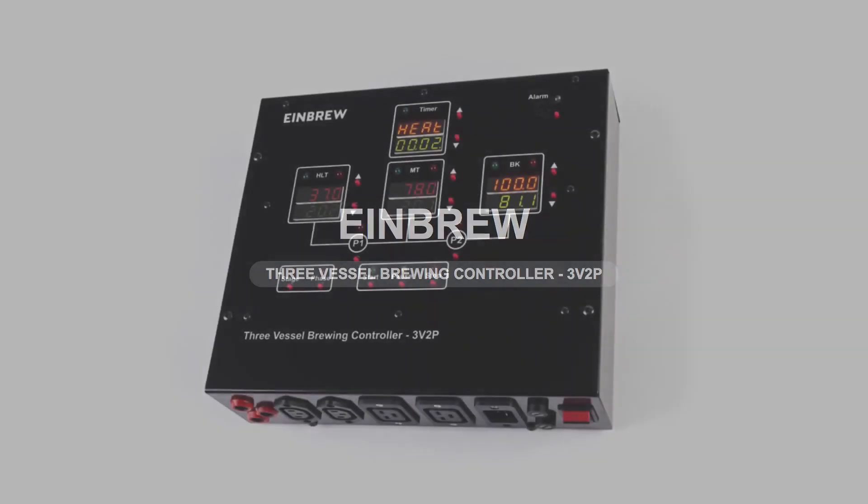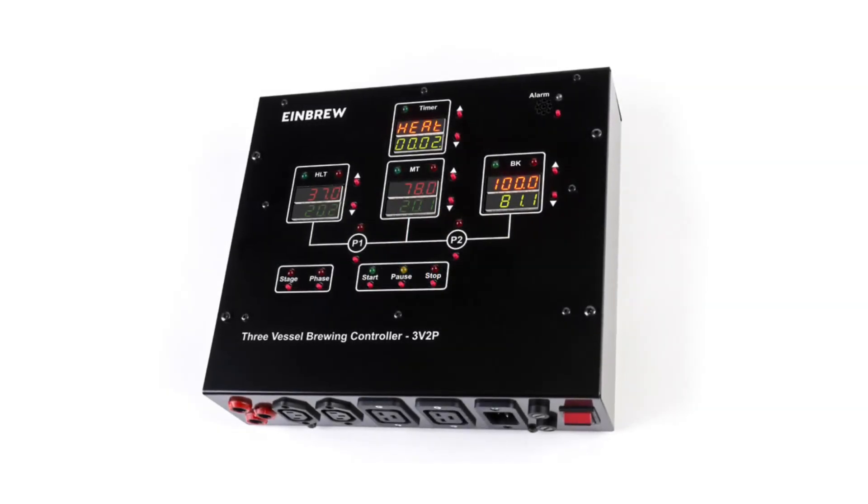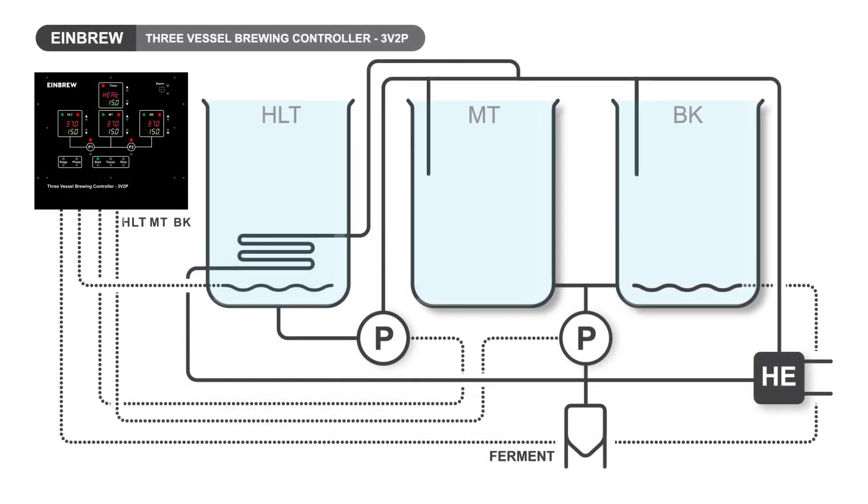The Einbrew 3V2P is a new state-of-the-art Herms or Rims controller for all-grain brewers, compatible with many configurations.